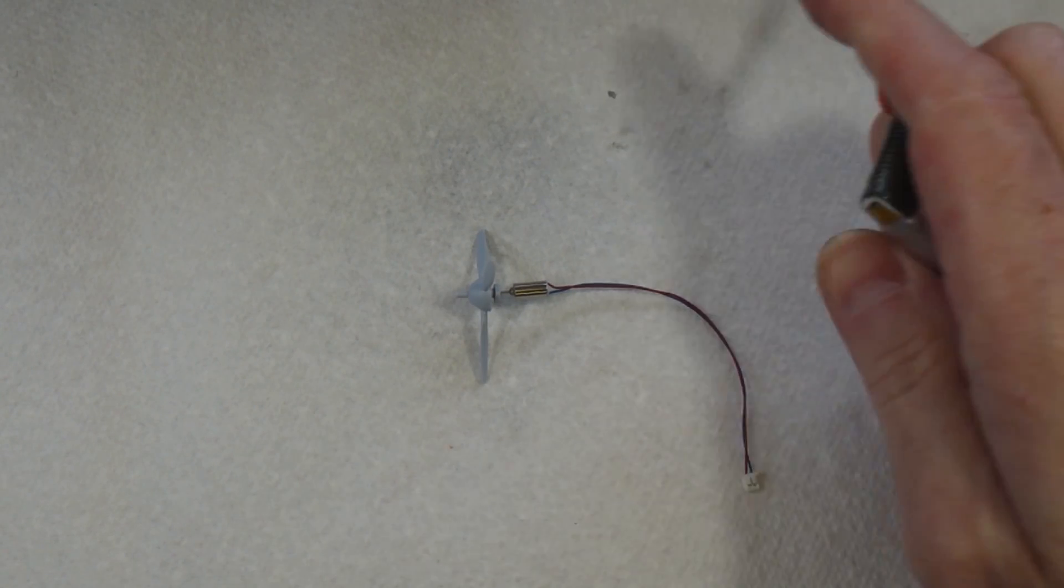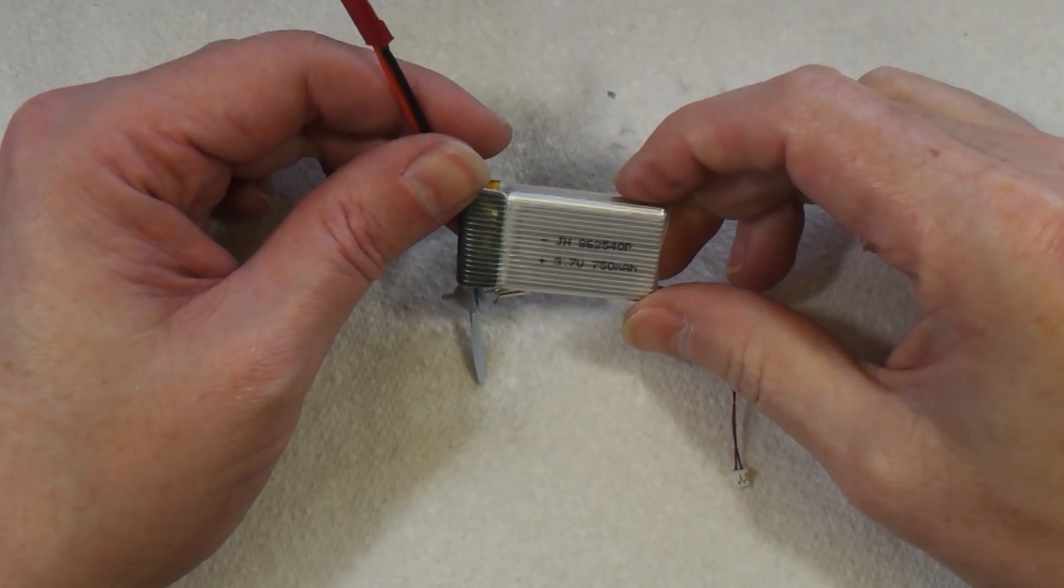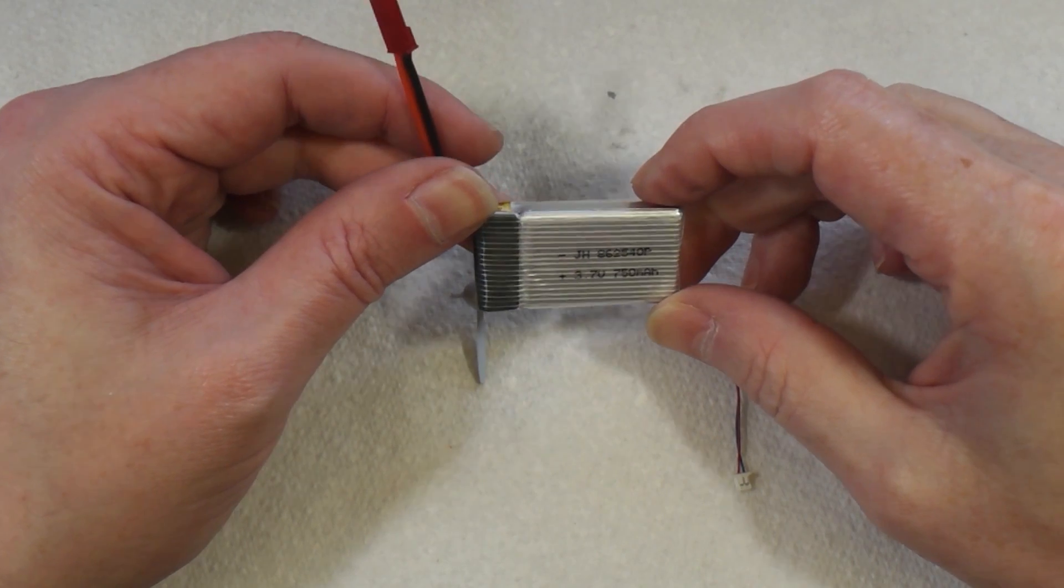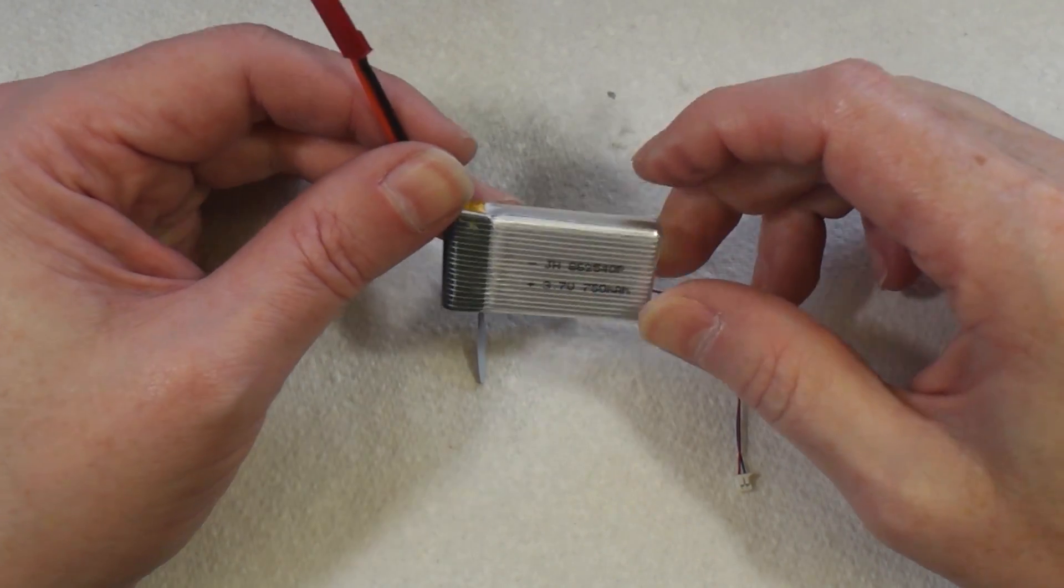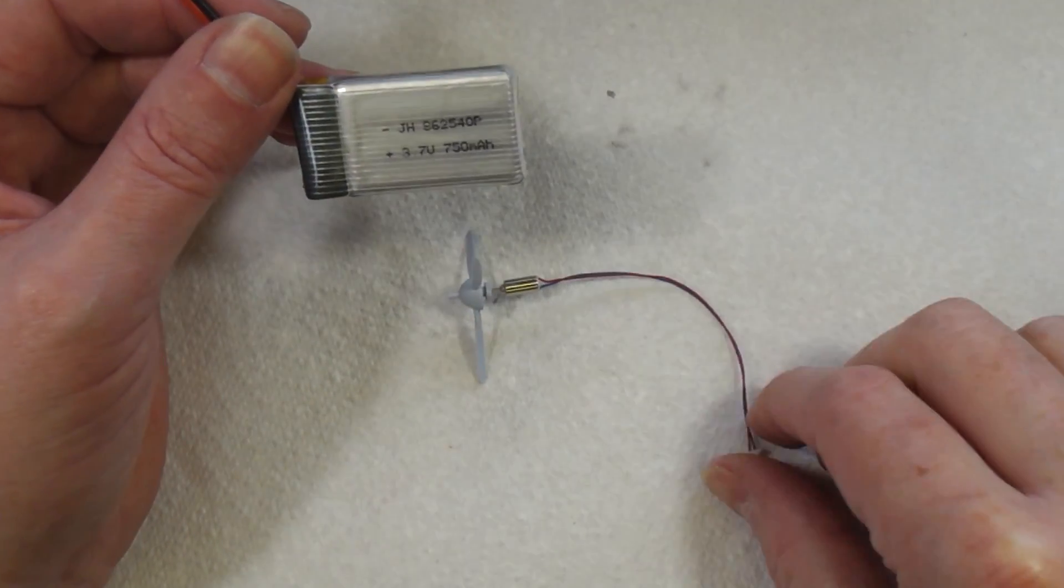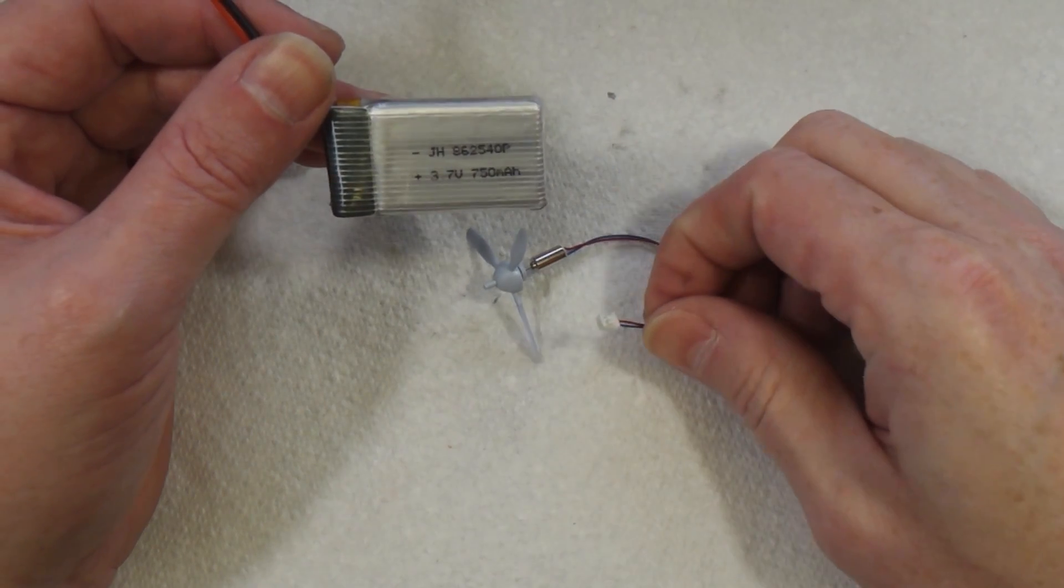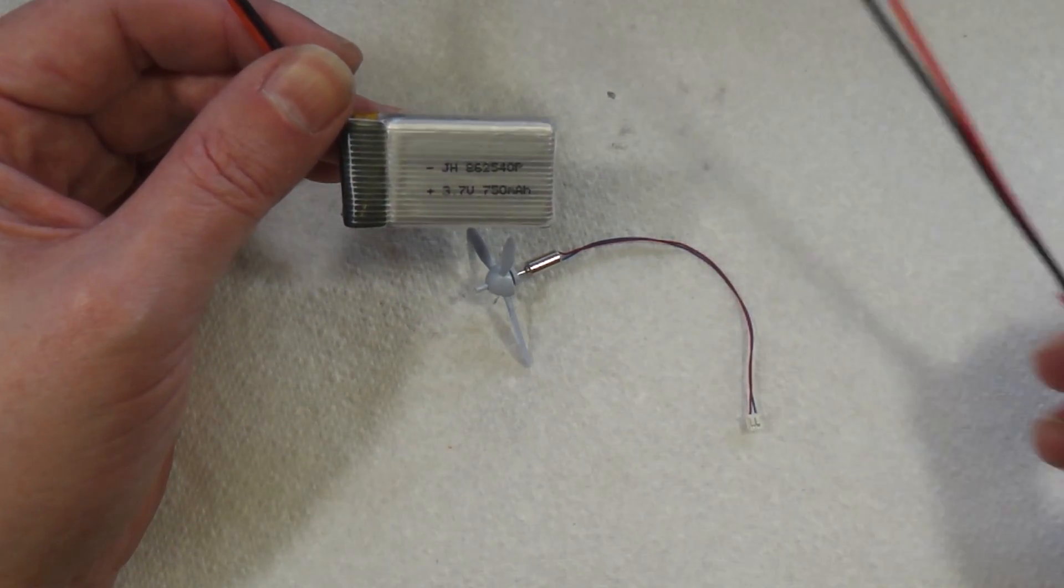Okay, so for a power source I've got here a 750 milliamp-hour, 3.7 volt lithium polymer battery. And again, because this has got a Molex connector on it, I don't want to cut the connector off.